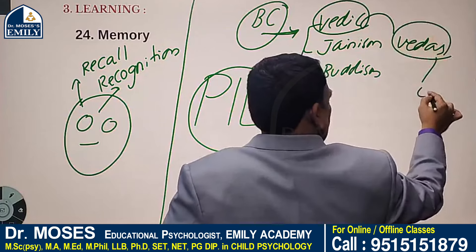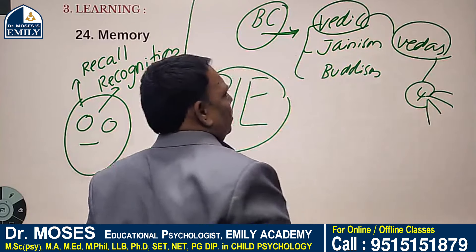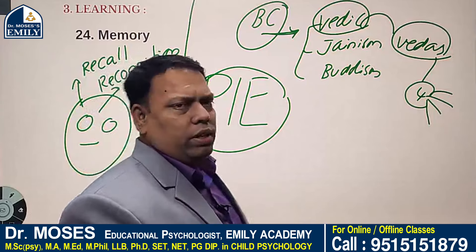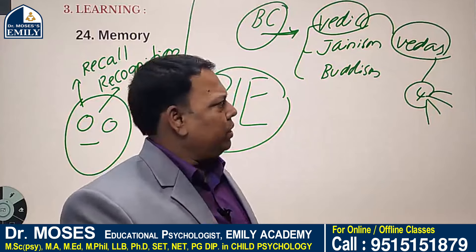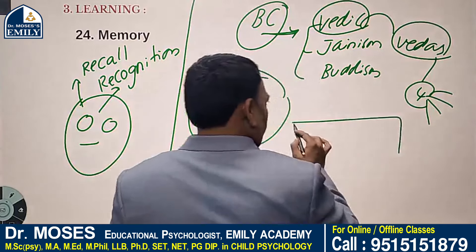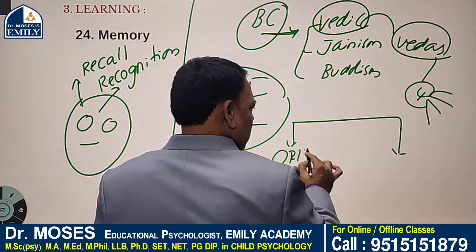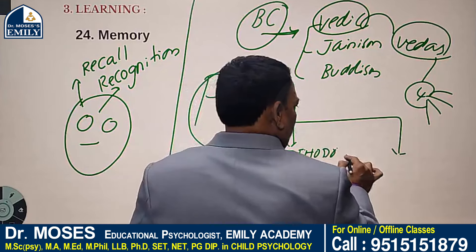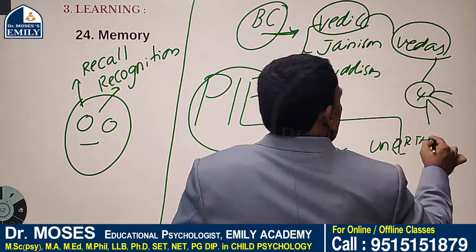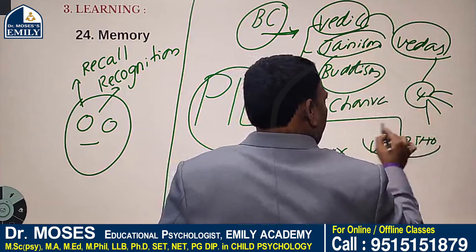There are four Vedas: Rig Veda, Yajur Veda, Sama Veda, and Atharva Veda. After completion of the Vedas, Vedangas or Upanishads emerged. If you understand Indian philosophy, there were two major classifications — orthodox and unorthodox. Jainism, Buddhism, and Charvaka come under unorthodox.